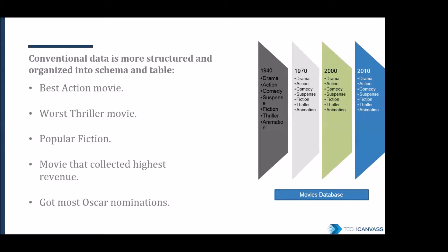Before writing data into your database you enforce the schema, so you know the outcome before it gets in. Once you know this, you can write reports like what was the best action movie in the 1970s, or the popular fiction movie that earned the highest revenue or got the most nominations. This is all possible because you know your data is well organized. Rules will not be broken because any data set breaking the rules won't get into your database — and that gives you the flexibility of writing structured reports.